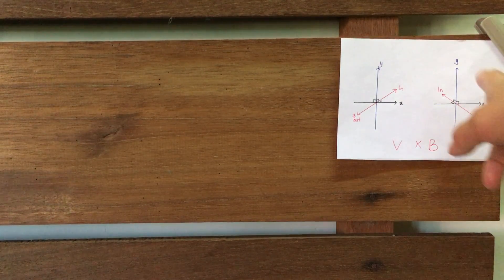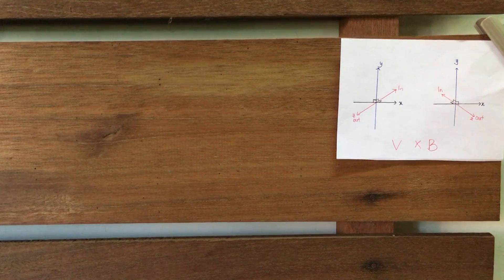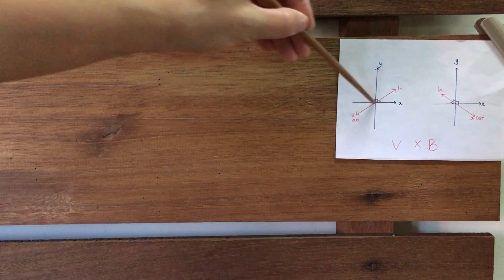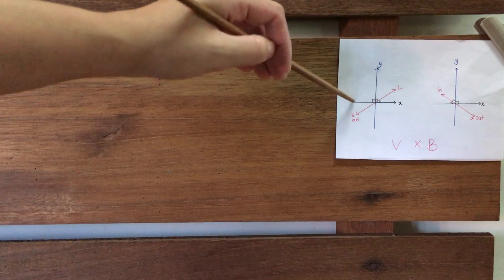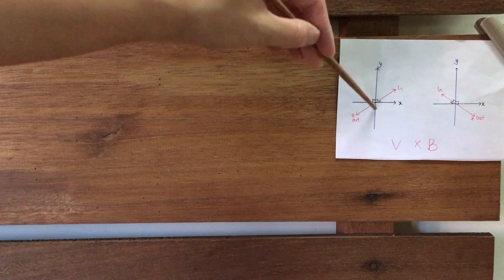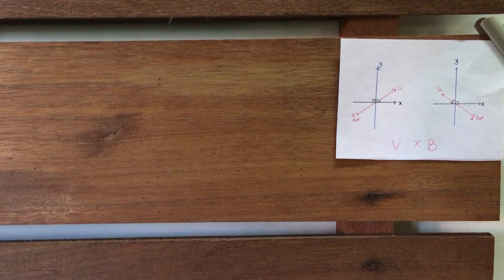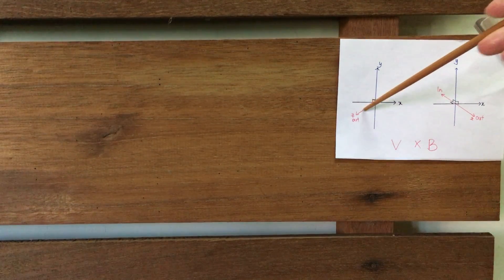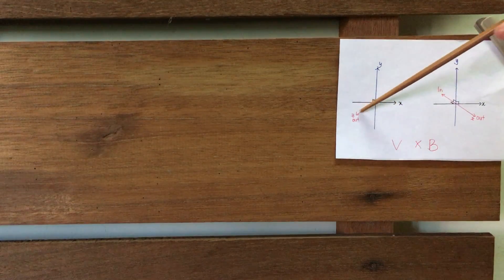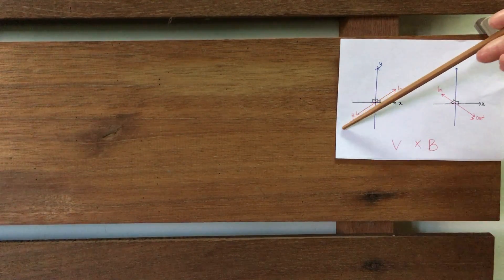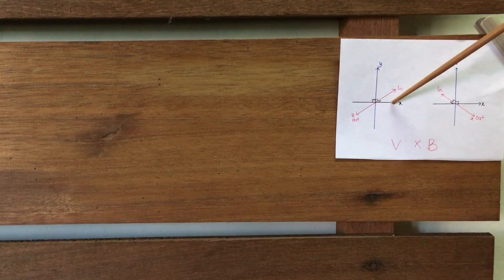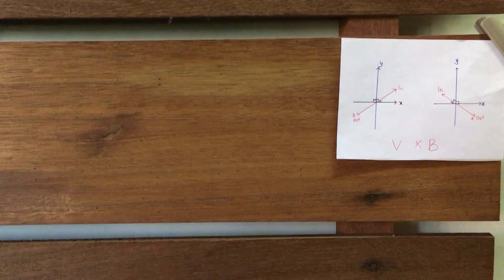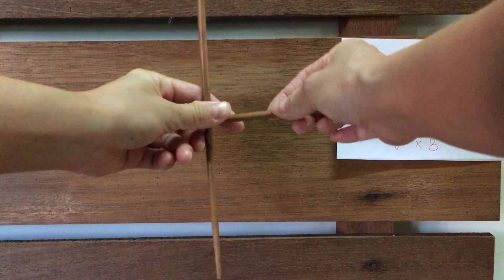Before we start, I will show you this diagram. When I have this horizontal line it means the x-axis, which is to the left and also to the right. For your y-axis, it means upwards and downwards. And then there is an extra axis which is your z-axis. If your arrow is like this, it means the motion is pointing out, and if your arrow is like this, the motion is pointing in.